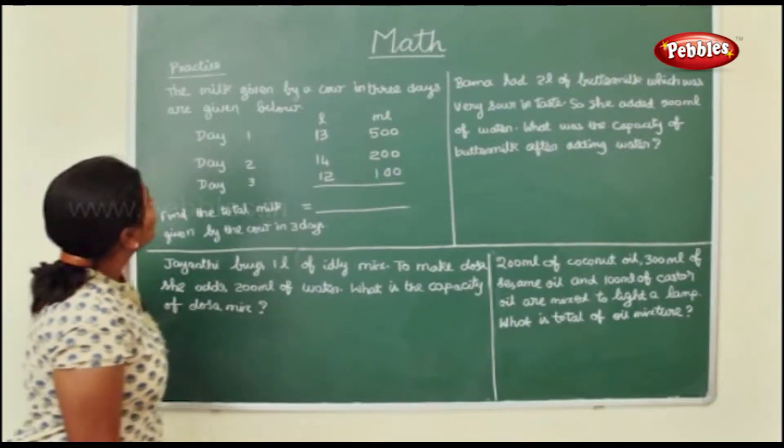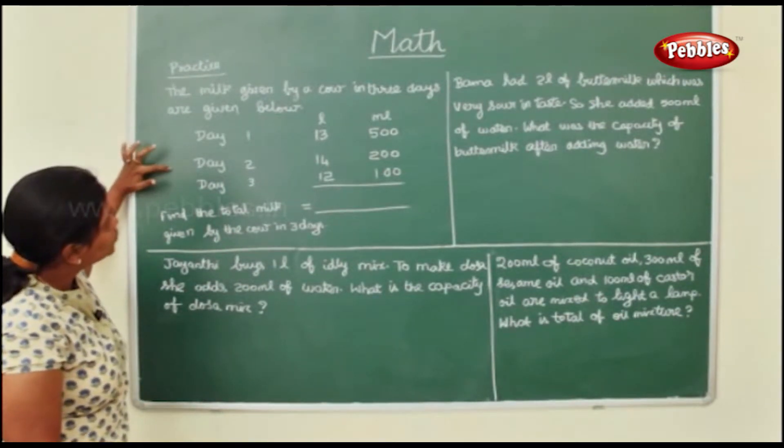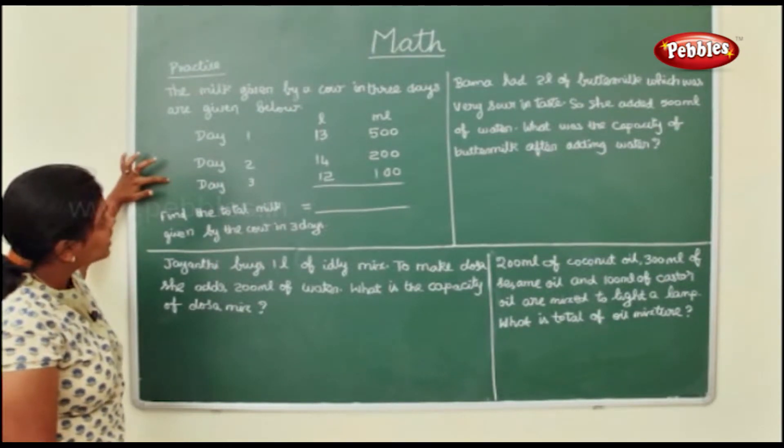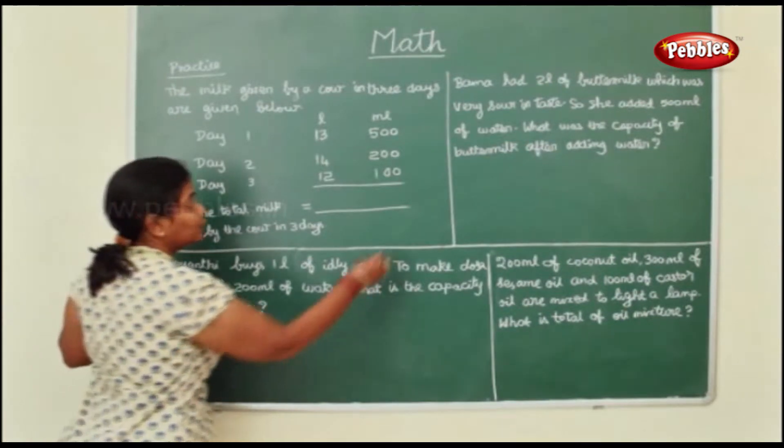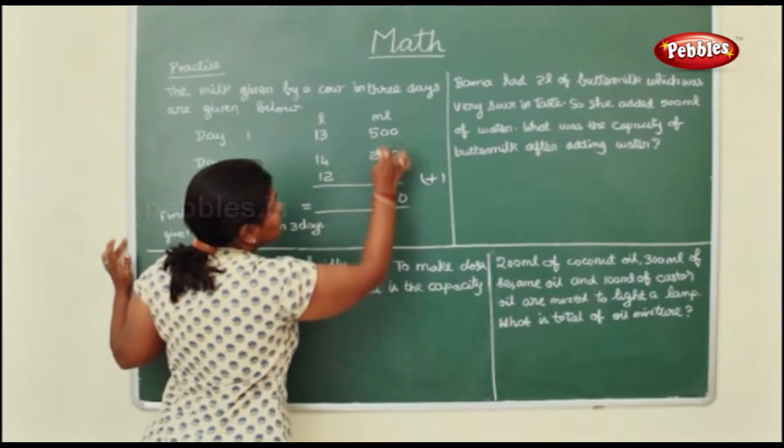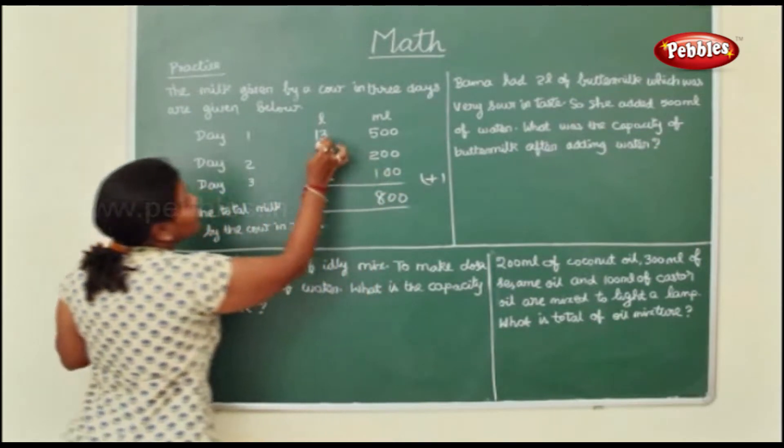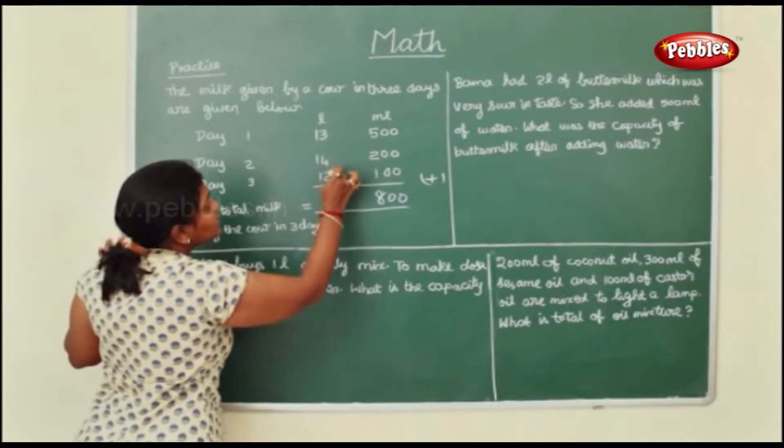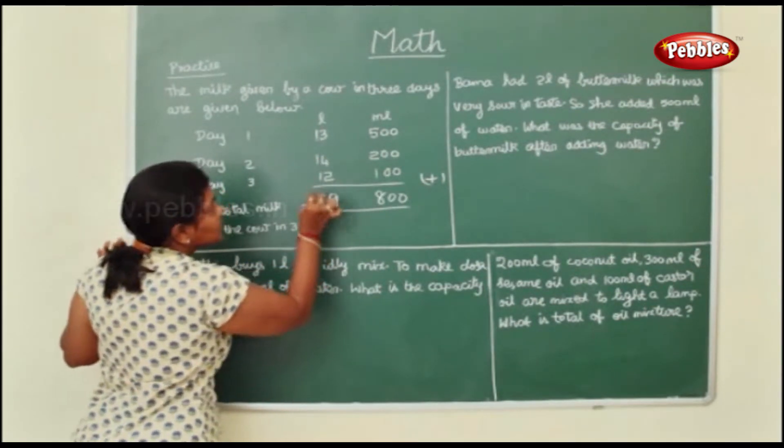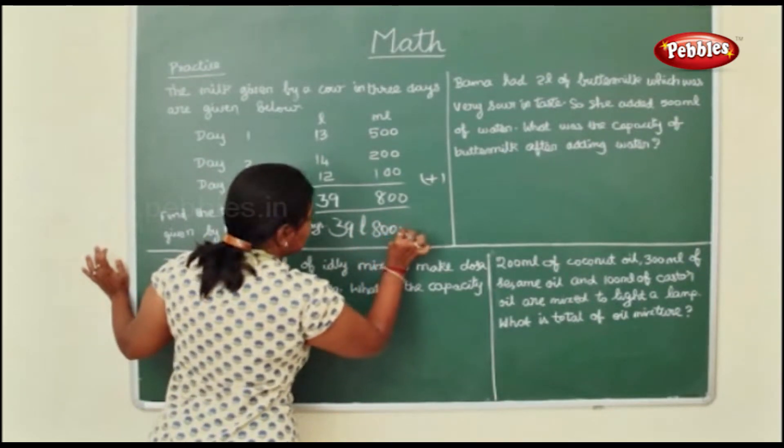Now the milk given by a cow in 3 days are given below. Day 1, 13 liters, 500 milliliters. Day 2, 14 liters, 200 milliliters. Day 3, 12 liters and 100 milliliters. The total milk we have to find. So we just add. I am starting to add from the milliliters. 5 plus 2 is 7, 7 plus 1 is 8. 3 plus 4 is 7, 7 plus 2 is 9. 1 plus 2 is 2, 2 plus 1 is 3. So the total is 39 liters and 800 milliliters.